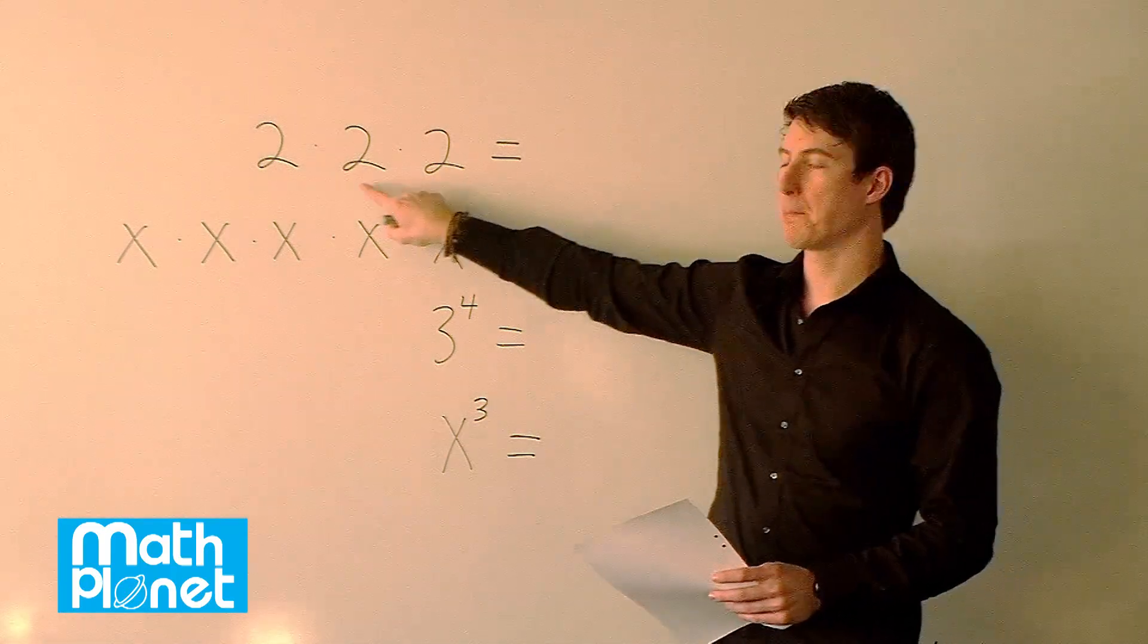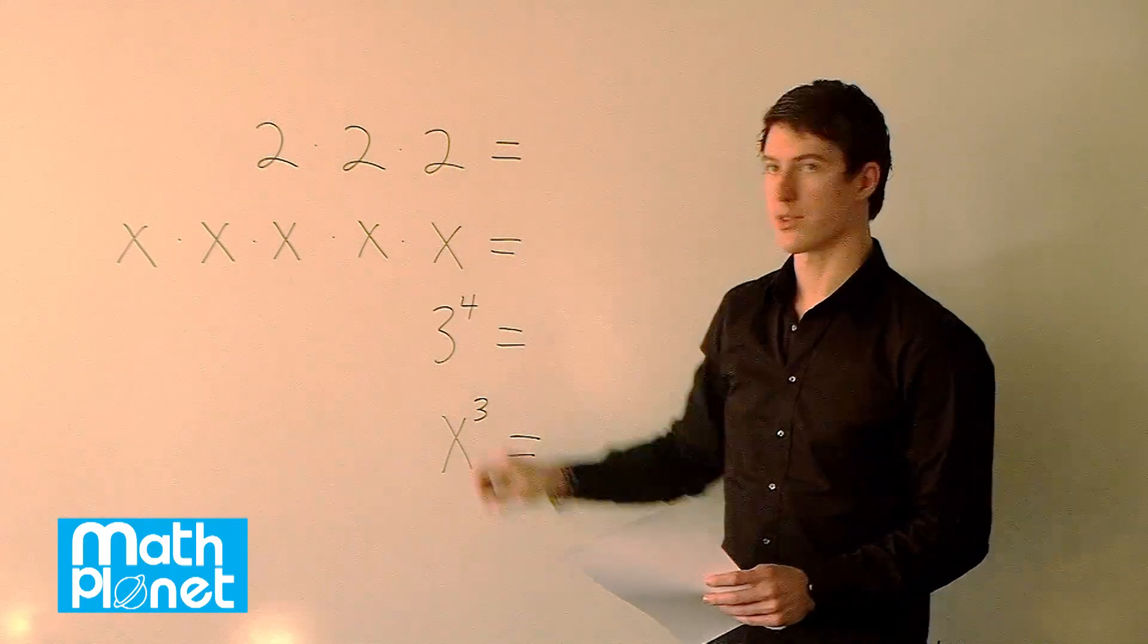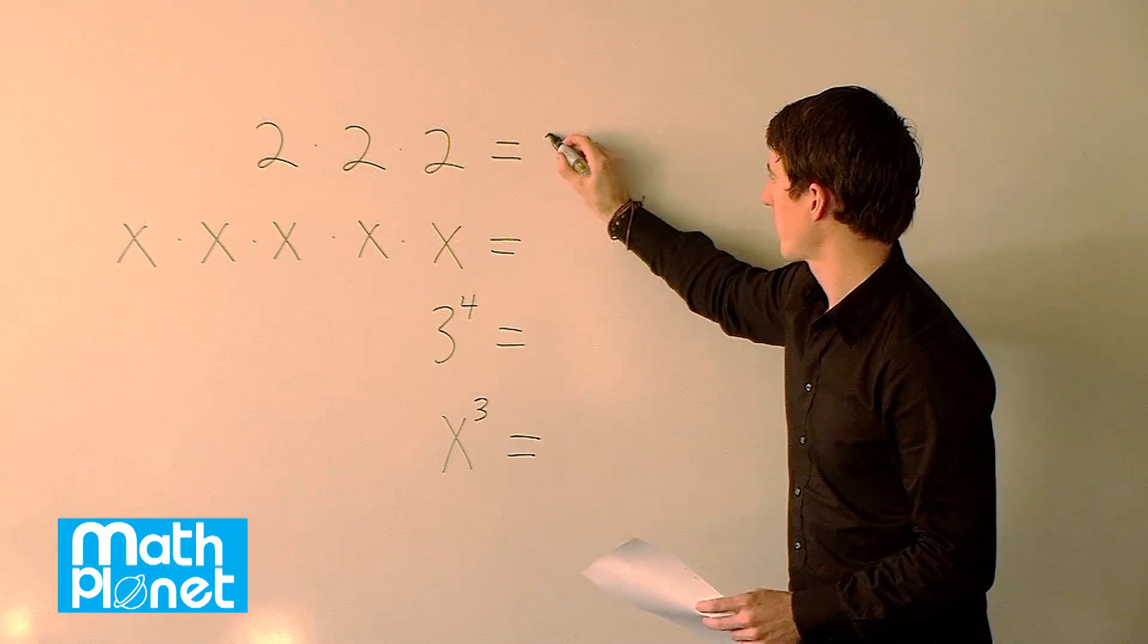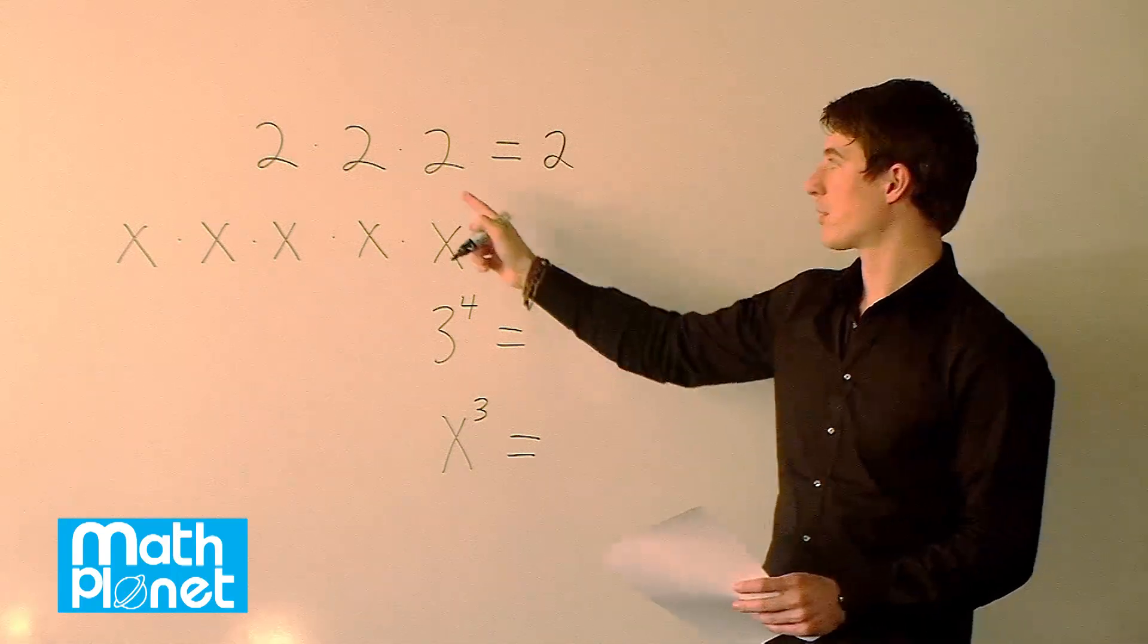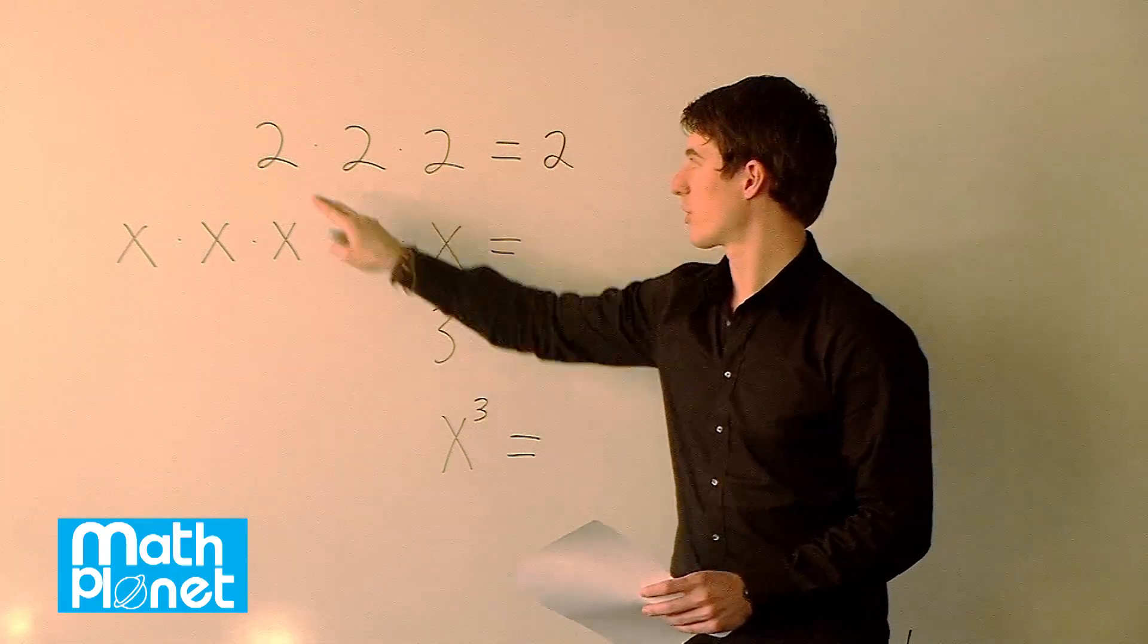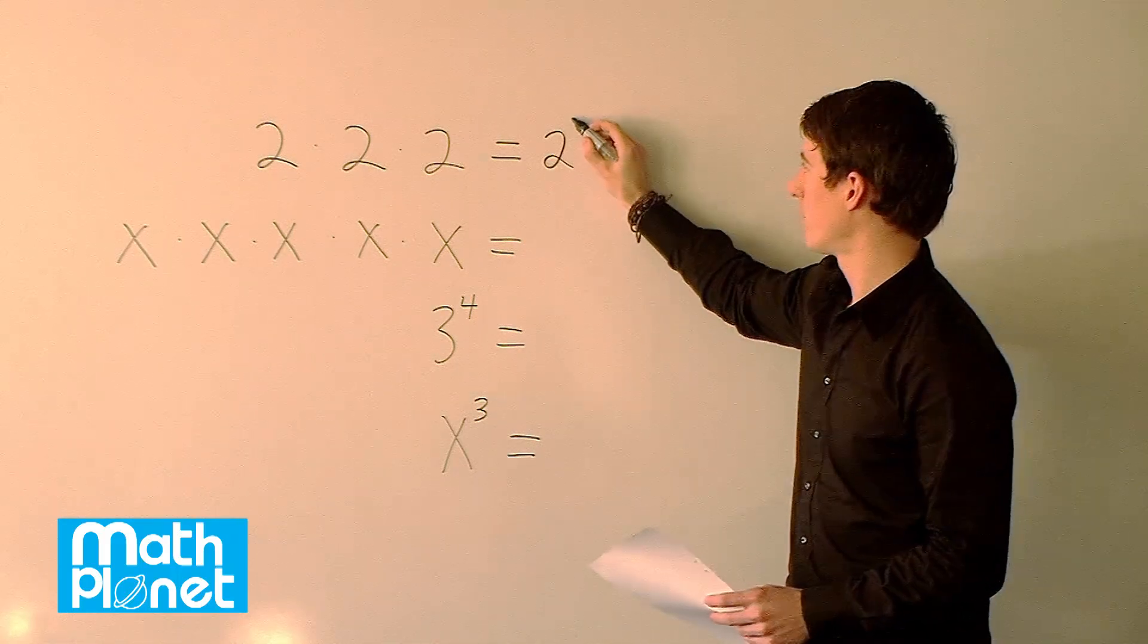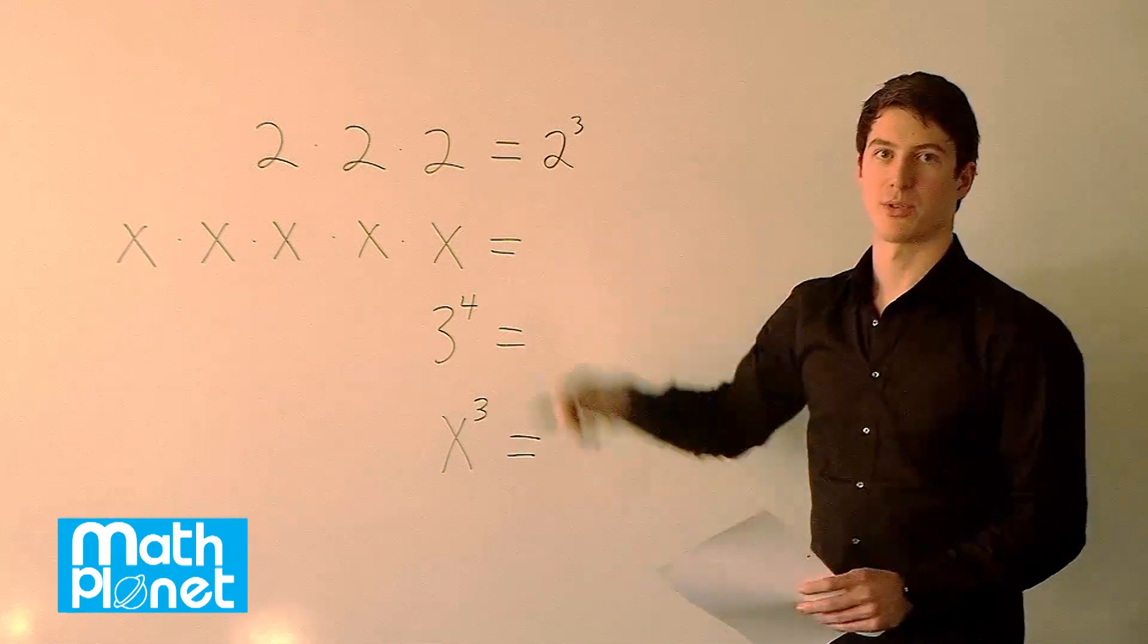So we can see we have the same base for both of these expressions. So we have all 2's here and all x's here. So we're going to have the same base, 2, and then we just add up the number of times that we have 2. So there are 3 of them. So this is the same as saying 2 to the power of 3. So 2 times 2 times 2.